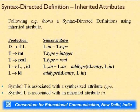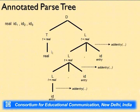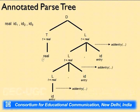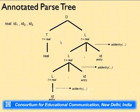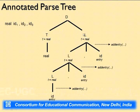Now this type information must be passed from T over to the L branch, because the identifiers under L need to know the type. For the production D derives T L, we write: L.in = T.type. This means whatever type T carries is passed to L. The attribute 'in' associated with L is an inherited attribute — its value depends on its sibling T.type, not on its own children. That is why the term 'in' is used: to signal that this is an inherited attribute.